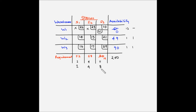We allocate the maximum number of units to the square with the minimum cost in the S3 column, which is W2S3. The maximum we can allocate to W2S3 is 19 units. With this allocation, the supply availability at W2 becomes 49 minus 19 = 30 units, while the demand at S3 becomes 19 minus 19 = 0 units. Since there is no longer any demand for S3, we cross off box W3S3.